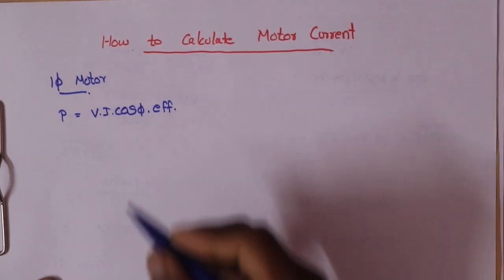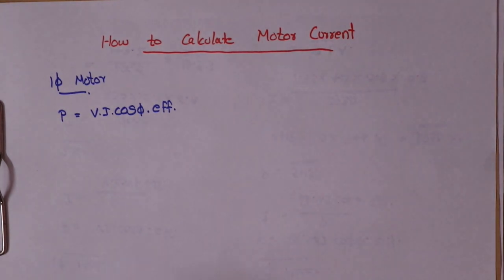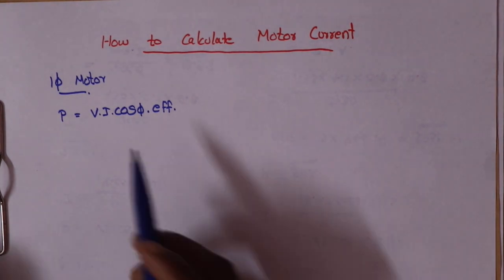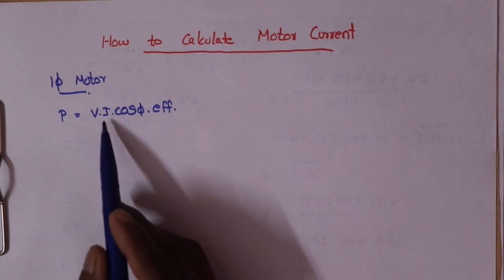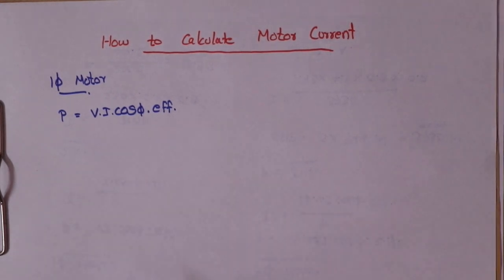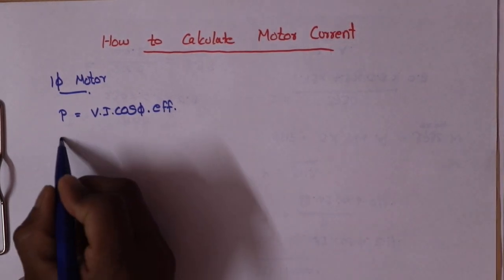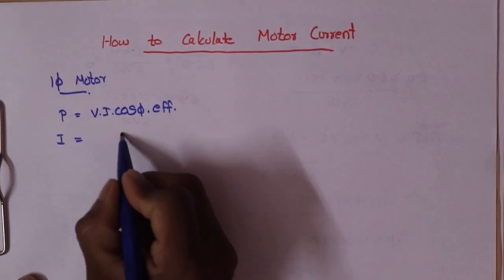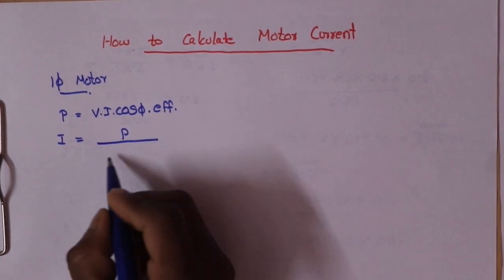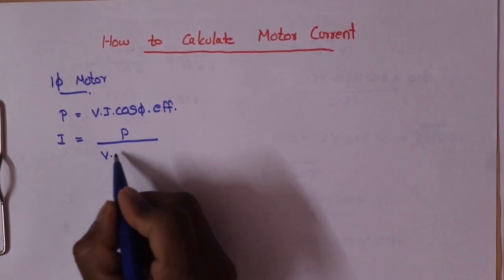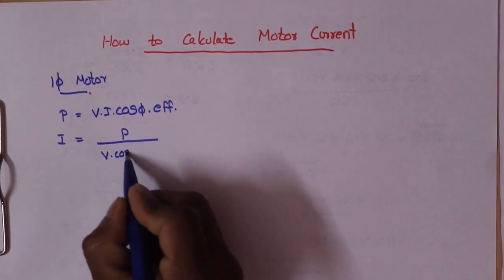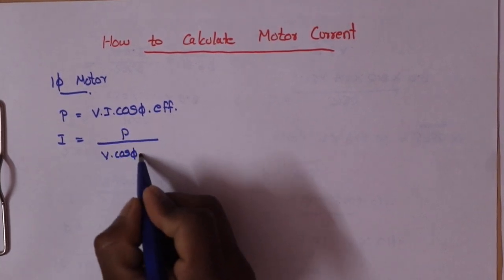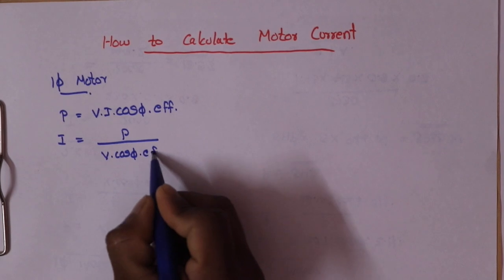The motor is also efficient, so we include efficiency in our equation. The current formula becomes: I is equal to P divided by V into cosφ into efficiency.